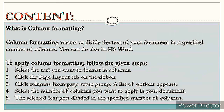Step one: select the text you want to format in columns. Step two: click the Page Layout tab on the ribbon. Step three: click Columns from the Page Setup group — a list of options appears. Step four: select the number of columns you want to apply in your document. Step five: the selected text gets divided into the specified number of columns.